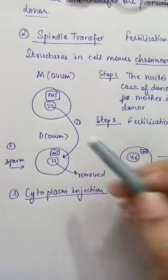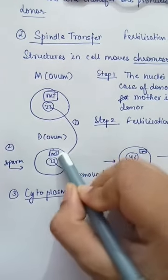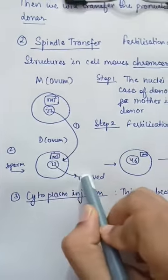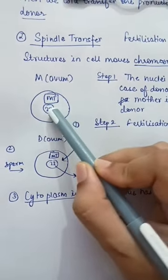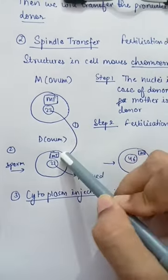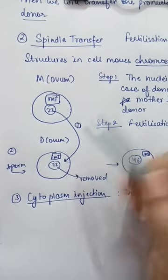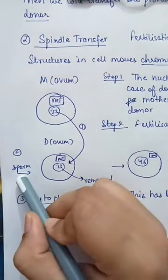The first step is that we will remove the nuclei of the donor's ovum. After this, the nuclei from the mother will be transferred into the donor. After transfer, we will fertilize this with sperm.